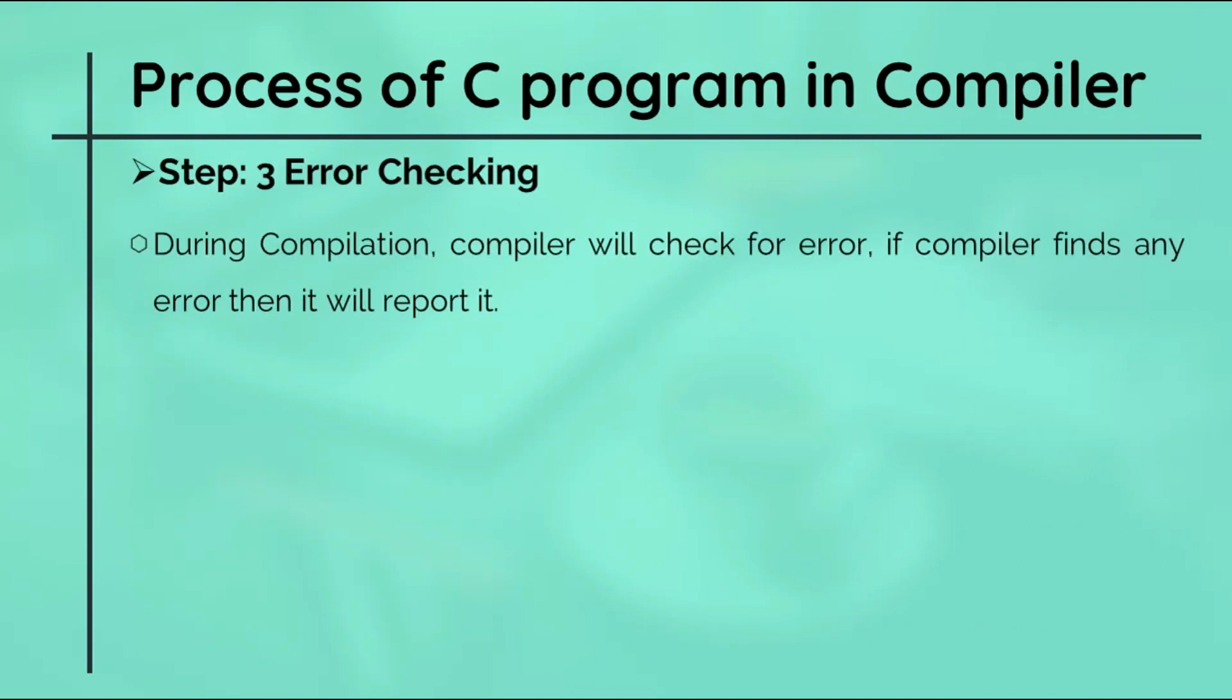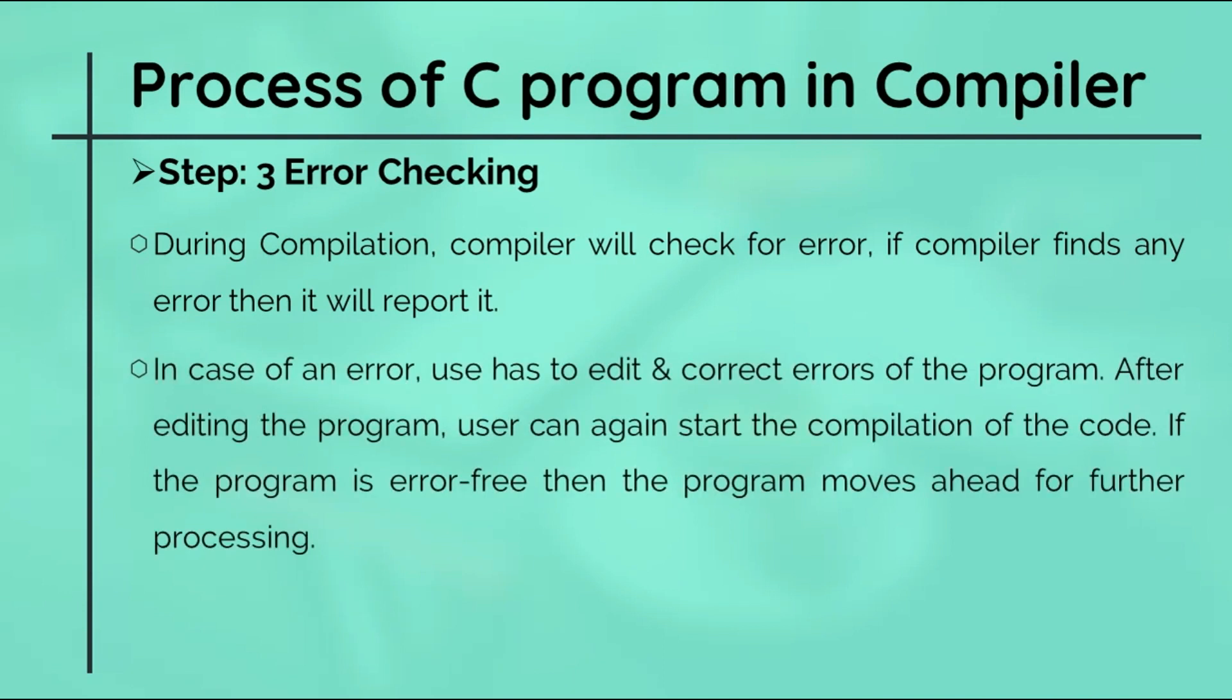The next step is error checking. During compilation, the compiler will check for errors. If the compiler finds any error then it will report it. In case of an error, the user has to edit it and correct errors of the program. After editing the program, the user can again start the compilation of the code. If the program is error-free, then the program moves ahead for further processing. At any stage, if any error comes, the user has to correct it to move ahead.